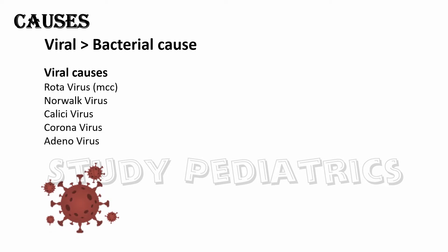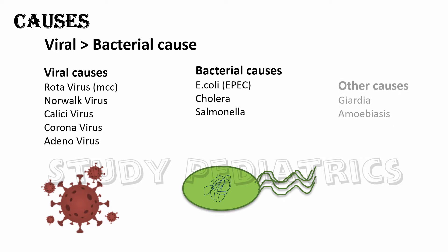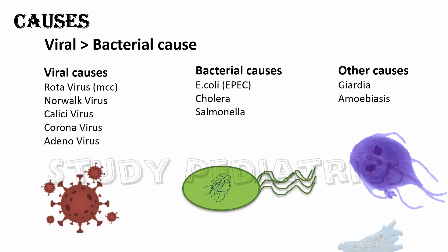Viral causes include Rotavirus — the most common cause of diarrhea in the world — followed by Norwalk virus, Calicivirus, Coronavirus, and Adenovirus. Bacterial causes include E. coli, specifically EPEC, then Cholera and Salmonella. Other causes of diarrhea are Giardiasis and Amoebiasis.